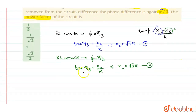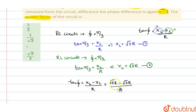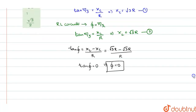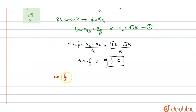Now substitute both into the general equation: tan φ = (XL − XC) / R. XL is √3R and XC is √3R, so the numerator becomes 0. Therefore tan φ = 0, which means φ = 0. The phase angle is 0. Since power factor is defined as cos φ, this gives power factor = cos(0) = 1. So the power factor is equal to 1 in this circuit.